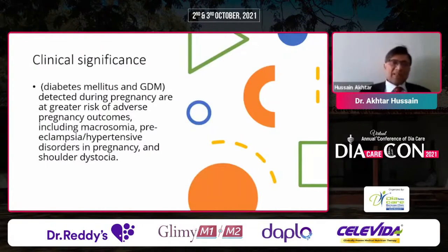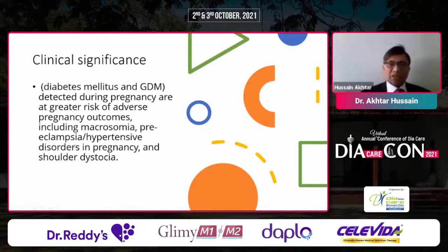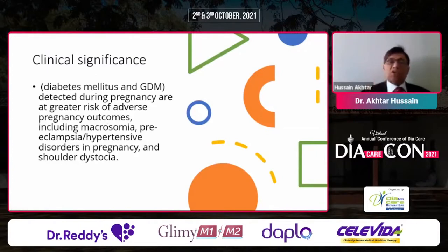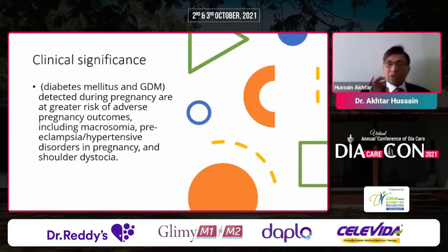The clinical significance is that diabetes mellitus and GDM detected during pregnancy carry a greater risk for adverse pregnancy outcomes, including macrosomia, preeclampsia, hypertensive disorders in pregnancy, and shoulder dystocia. Our guiding principle should be to determine which diagnostic criteria and which treatment approach give the best outcomes — not simply what has been published in the best journals.